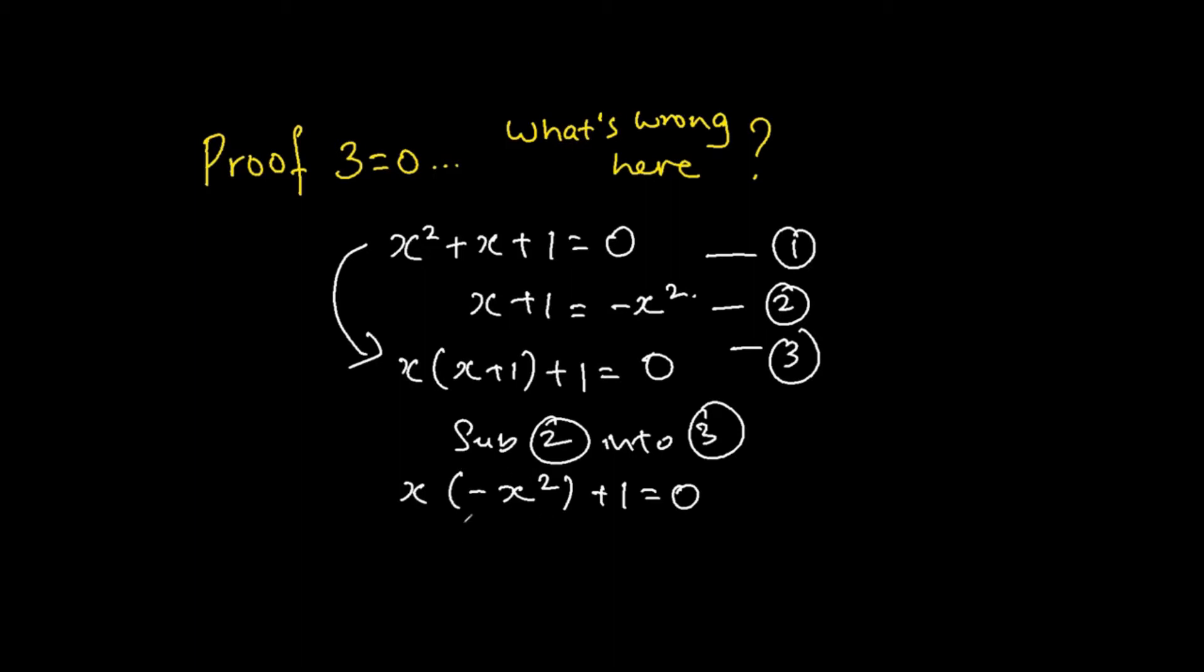And then I would multiply the x, that would be minus x cubed plus 1 is equal to 0. So from here, we know that one of the solutions is that x is equal to 1. Because if you're deciding x is equal to 1, you get minus 1 plus 1 is equal to 0.